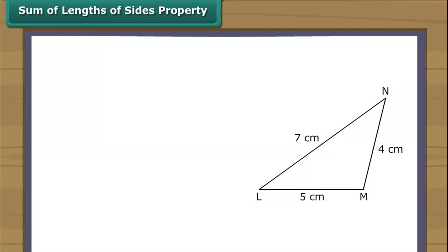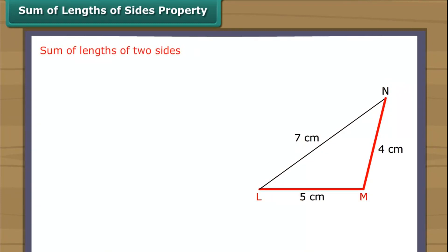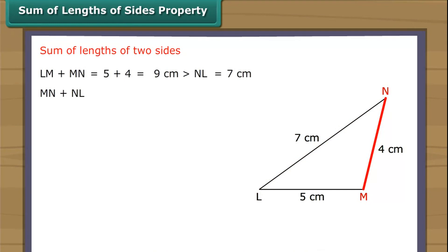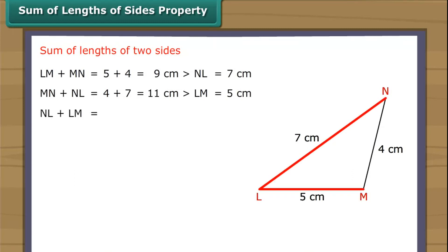In triangle LMN: LM is 5 cm, MN is 4 cm, and NL is 7 cm. LM plus MN equals 5 plus 4, which is 9 cm — greater than NL (7 cm). MN plus NL equals 4 plus 7, which is 11 cm — greater than LM (5 cm). NL plus LM equals 7 plus 5, which is 12 cm — greater than MN (4 cm).